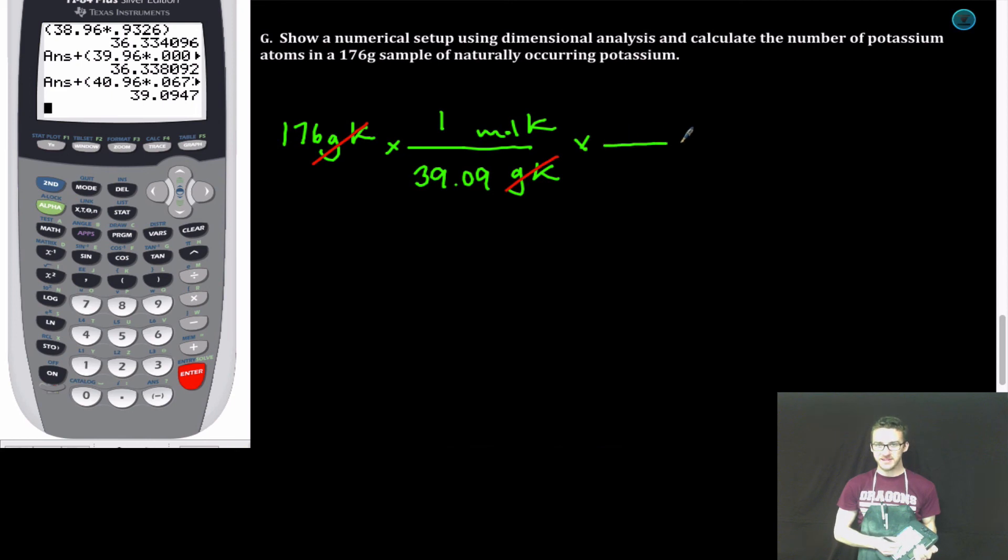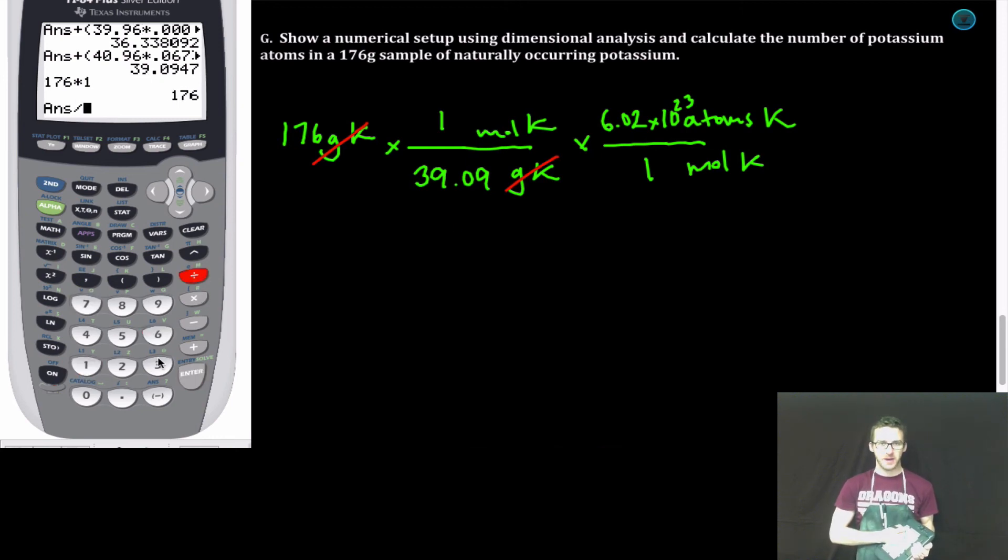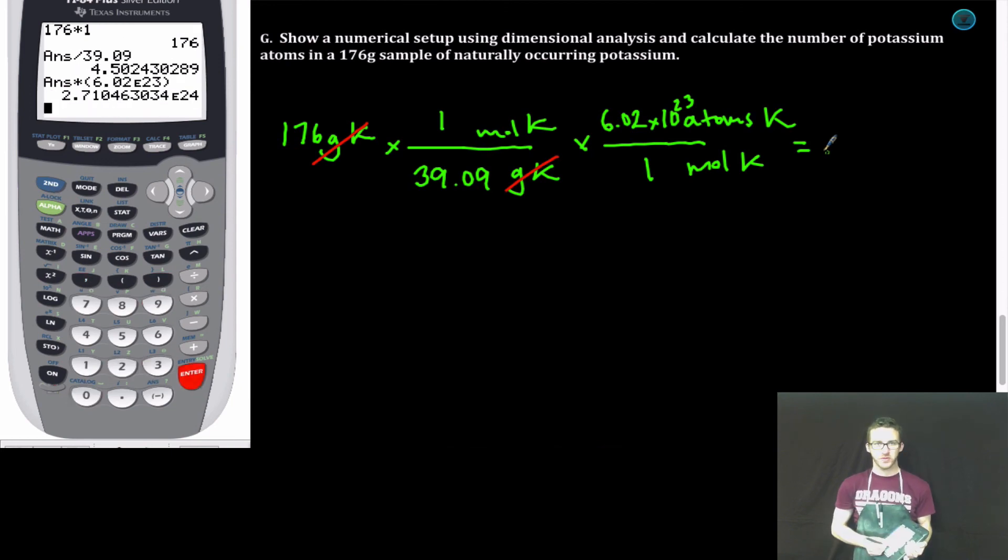As I finish this up and convert to atoms of potassium, I think about the relationship between moles and atoms, which is given by Avogadro's number. Because I know that I have more than one mole of potassium, I'm going to have more than Avogadro's number of atoms. Let's calculate this. 176 times one divided by 39.09, times 6.02 times 10 to the 23. Rounding to three sig figs, 2.71 times 10 to the 24 atoms of potassium.